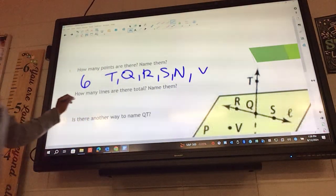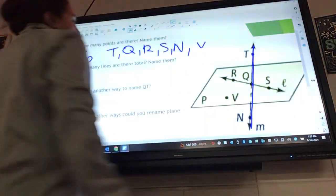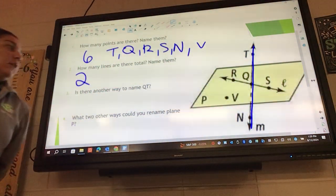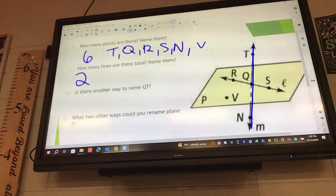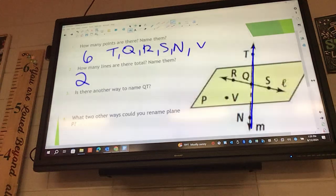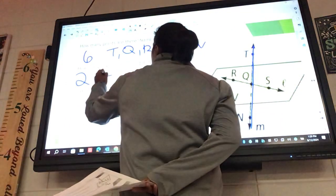So there are two lines, and we need to name them. Let's start with this up and down one. How can we name this line? TQ. What else can we call it? TN. NQ. QT. Do you need a pencil? Yes. They're always right here. You don't ever have to ask, you just grab them.